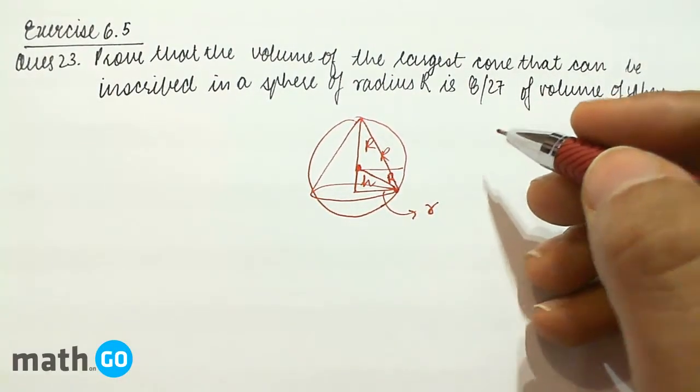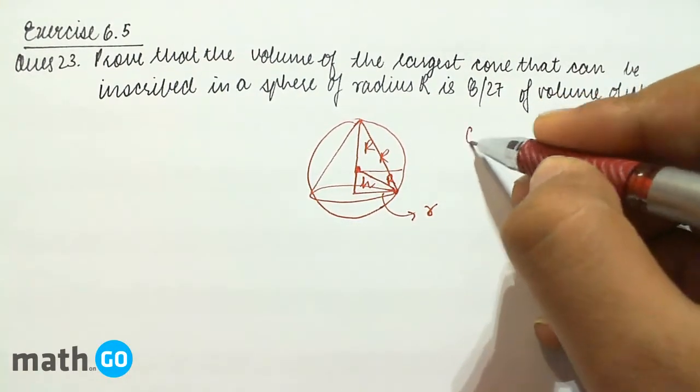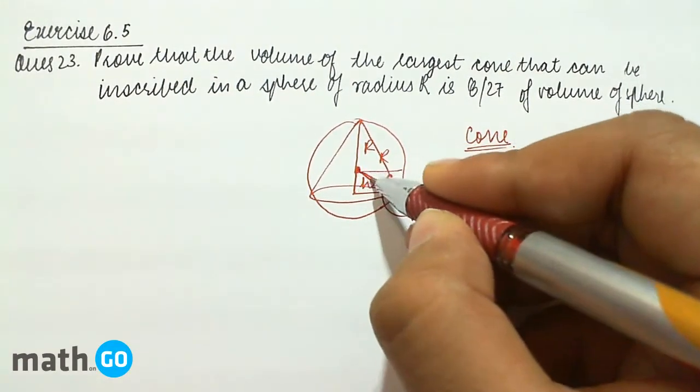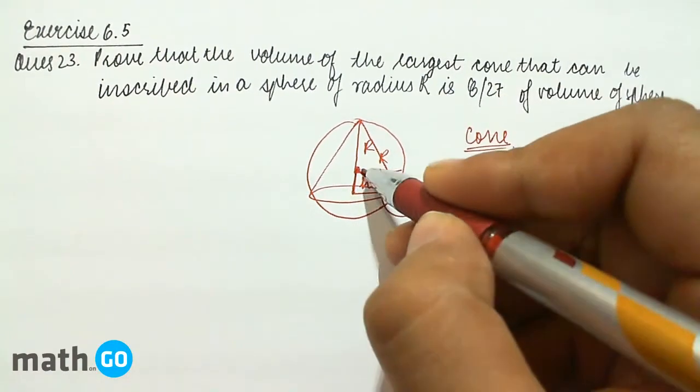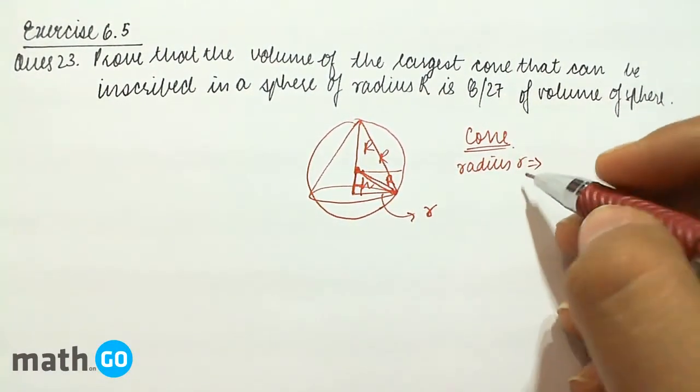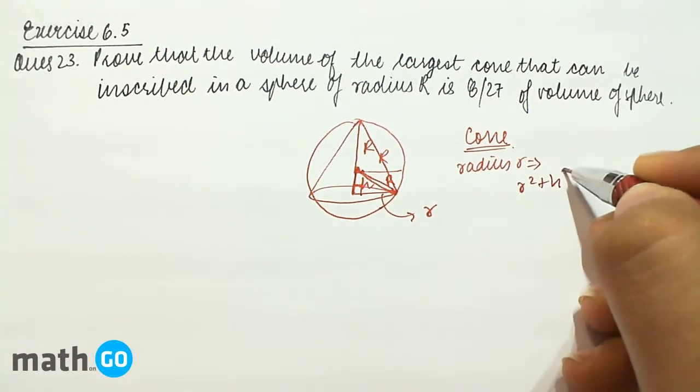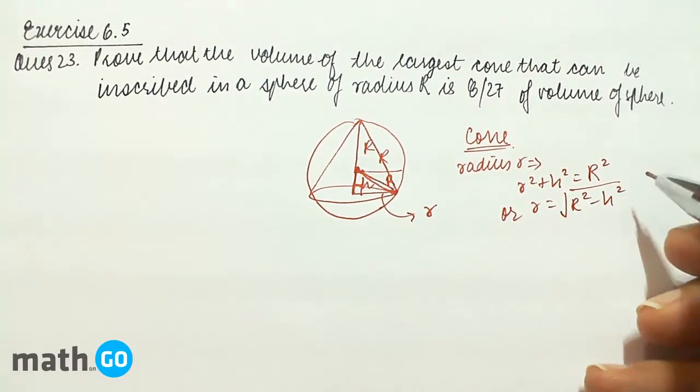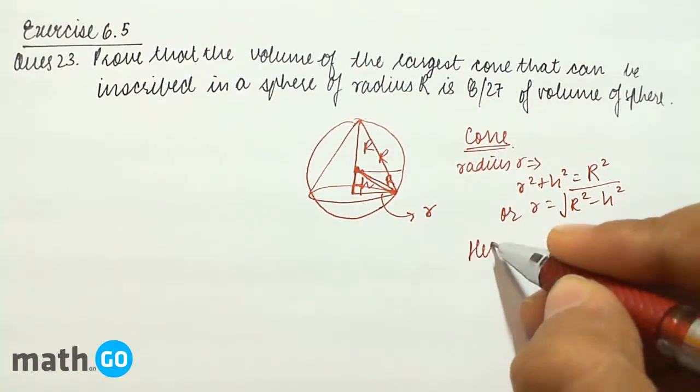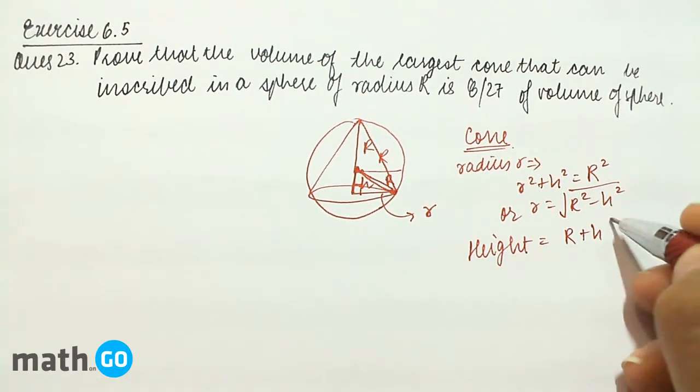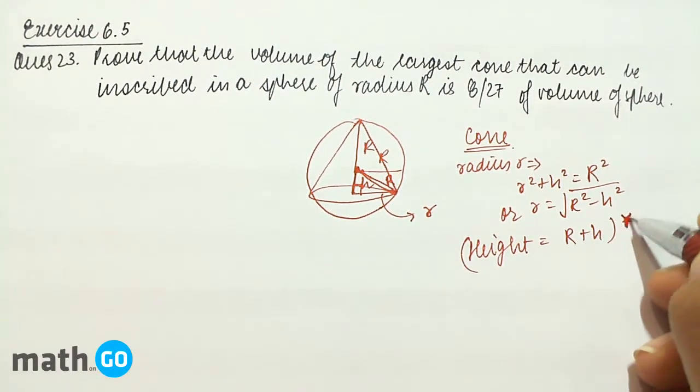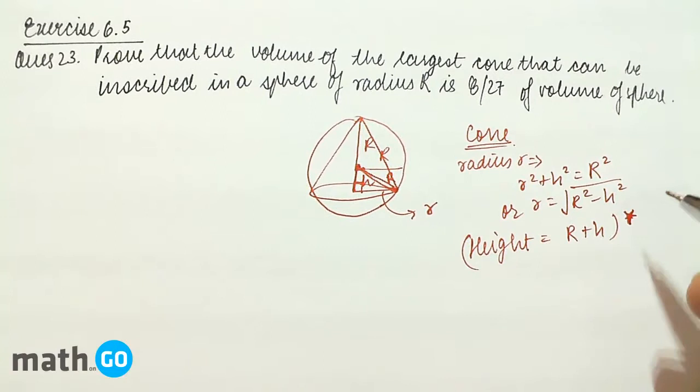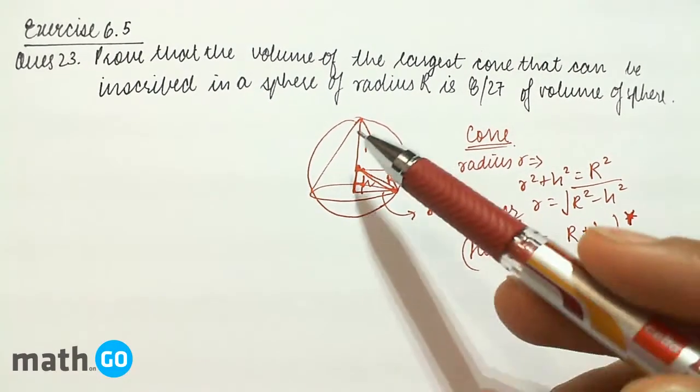So here we get that, in the cone, radius small r equals to... Now this is a right circular cone. This is 90 degrees. This implies r² + h² gives capital R² or r equals to root of R² minus h². And for the height it is R plus h. This is a point where there is a lot of scope for error because h is usually the thing that we take for height, but this means the height is R plus h.